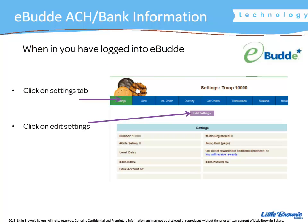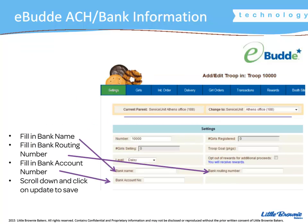You will click on the settings tab and edit your settings. Then you will fill in your bank name, routing number, and account number, and scroll down to the bottom and click on update to save that information.